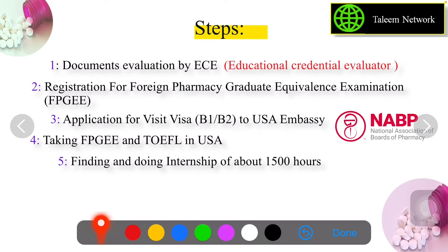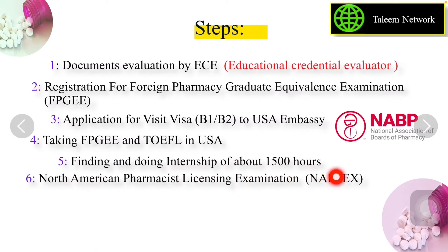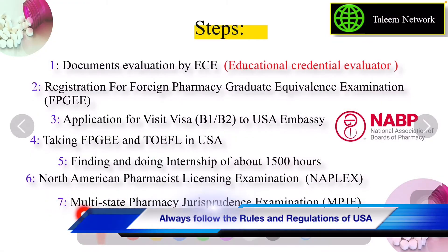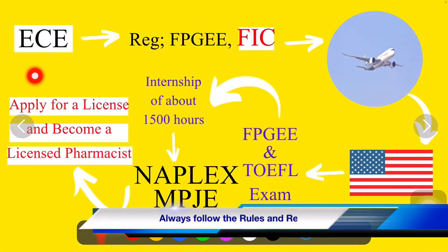When you qualify both exams, you proceed to the next step, which is completing your internship of 1500 hours. After completing your internship, you can take your NAPLEX exam. When you pass NAPLEX, you go on to the law exam, also called the Multistate Pharmacy Jurisprudence Exam. After clearing all these exams, you will get your license and can work as a retail pharmacist in USA.